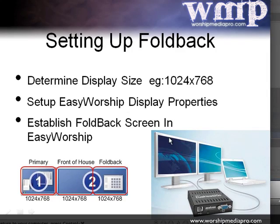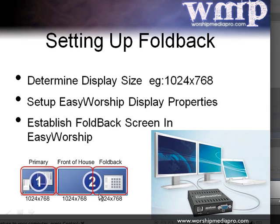The idea is to take two displays and span your desktop across them. In the example I'll use throughout this tutorial, the resolution is 1024 by 768. So your primary monitor is 1024, your front-of-house projection display is also 1024, and the foldback is 1024. Note that 1024 by 768 is a 4:3 aspect ratio. Your screen display might vary — you might have 800 by 600 or already be using 16:9 — and you can apply the math accordingly.